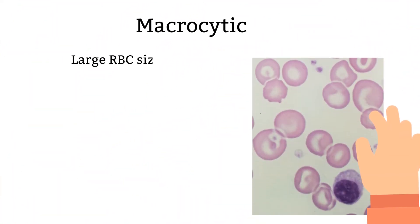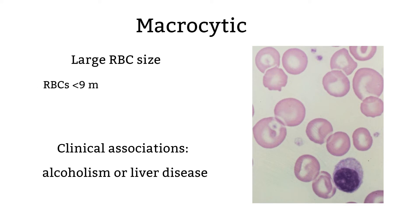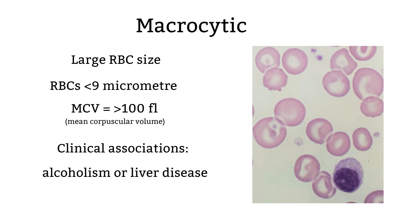Macrocytic is a term used to describe large red blood cells. There are varieties within this type: cells could be slightly oval or round, as seen in alcoholism or liver diseases. For macrocytic, the red blood cell has to be larger than 9 micrometers and the MCV is greater than 100. The hemoglobin is usually normal. Before we move to the next category, let's take a look at some pictures.